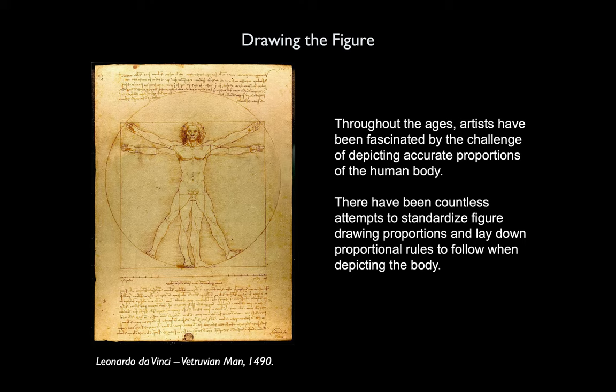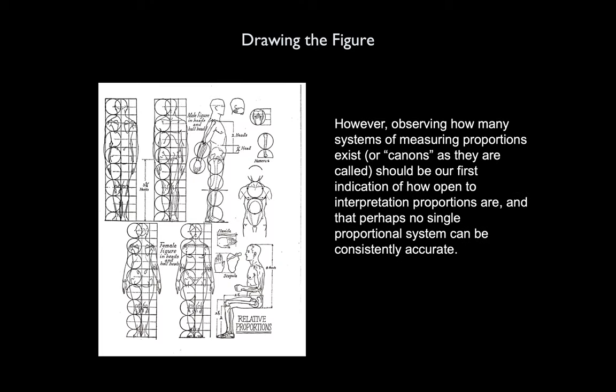Throughout the ages, artists have been fascinated by the challenge of depicting accurate proportions of the human body. There have been countless attempts to standardize figure drawing proportions and laying down proportional rules to follow when depicting the body. However, observing how many systems of measuring proportions exist, or canons as they're called, should be our first indication of how open to interpretation proportions are, and that perhaps no single proportional system can be consistently accurate or necessarily trusted.